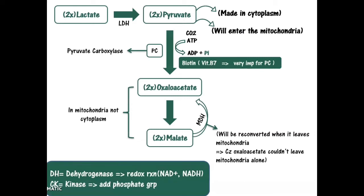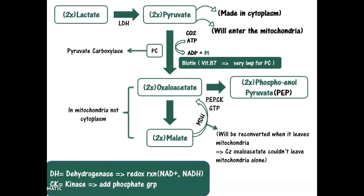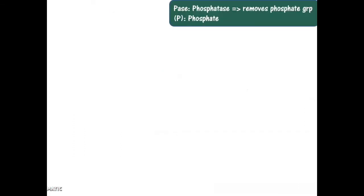The conversion of oxaloacetate into phosphoenolpyruvate (PEP) will be catalyzed by the enzyme phosphoenolpyruvate carboxykinase (PEPCK). Now the phosphoenolpyruvate is present.